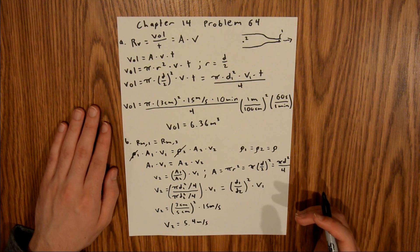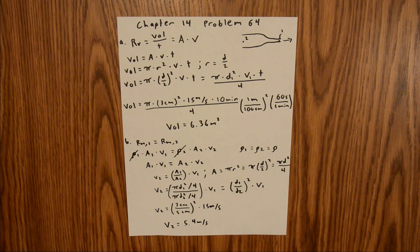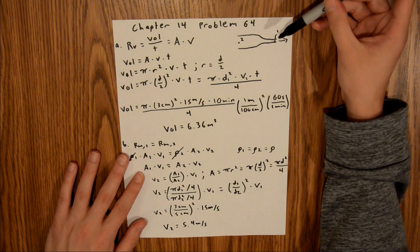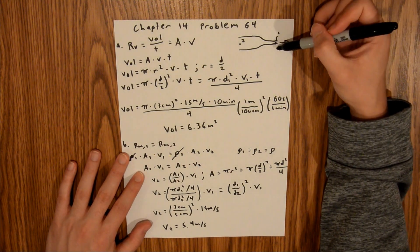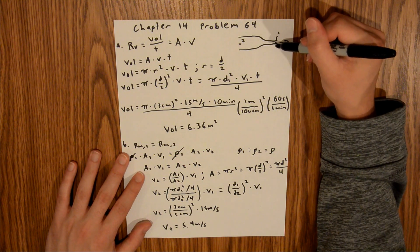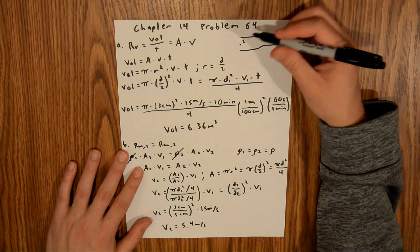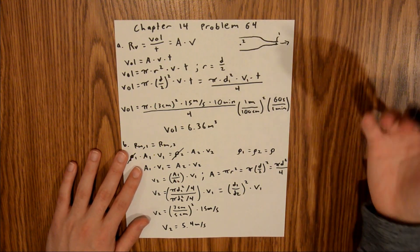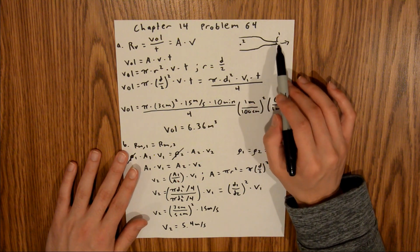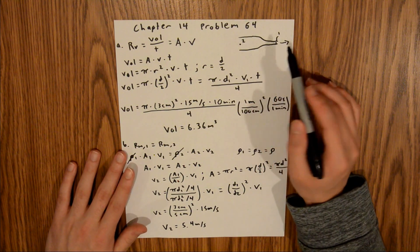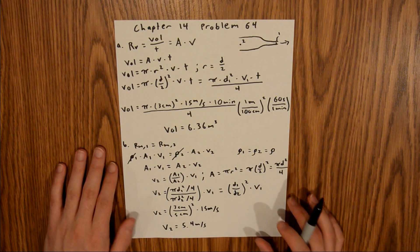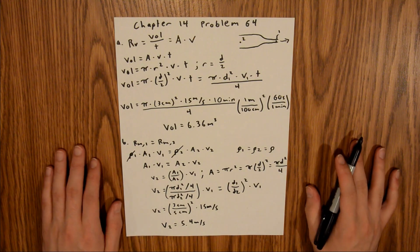As a sanity check, v2 is much smaller than v1. Looking at the drawing, point 1 is in a more constricted area, so water must flow more quickly there to maintain the same mass flow rate. The bigger section should have a slower velocity, which is indeed the case. Now I'll get another piece of paper to complete part C.